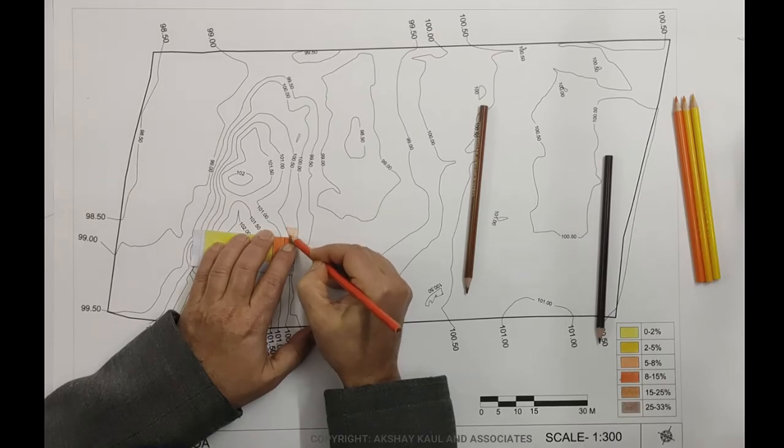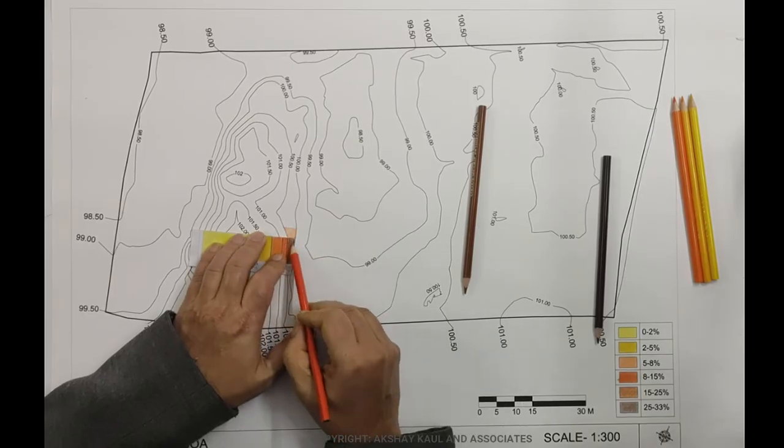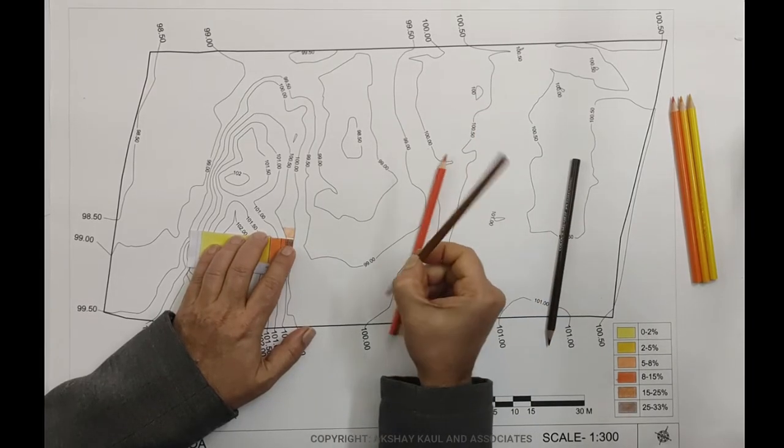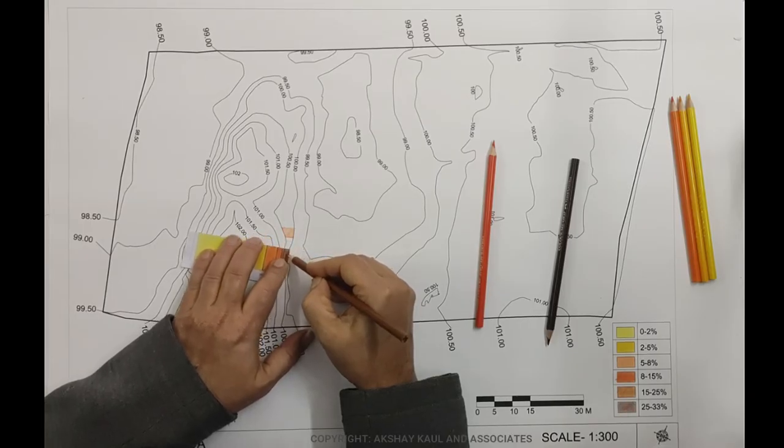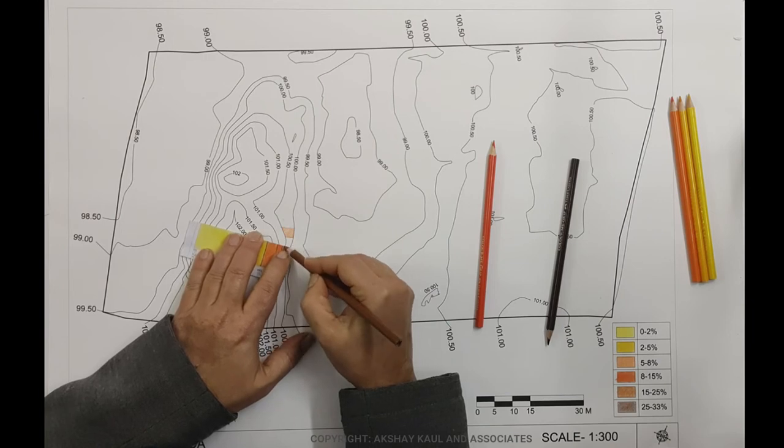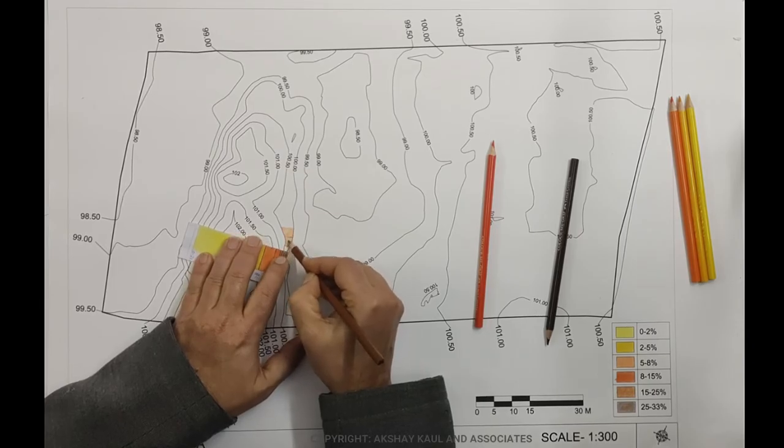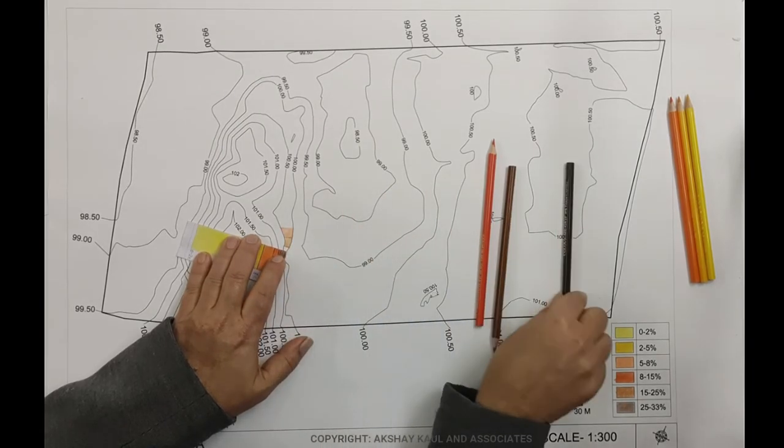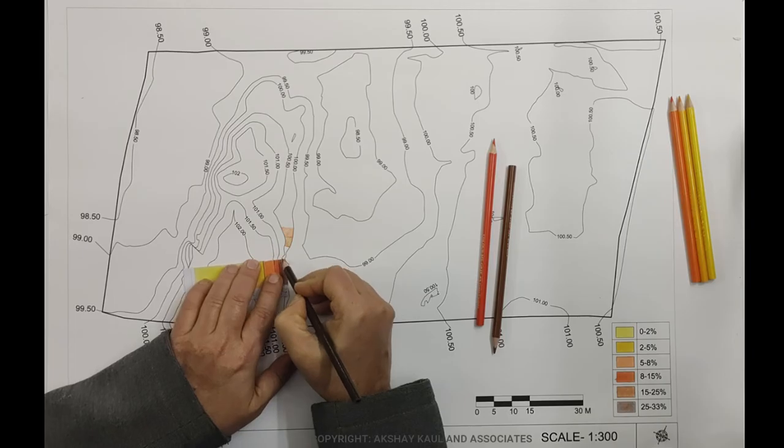Which approximately corresponds to 8 to 15 percent slope. Now as you pull it back, you are in the zone of 15 to 25 percent slope, which will change over here. This is 15 to 25 percent slope. And here this is 25 to 33 percent slope in this zone.